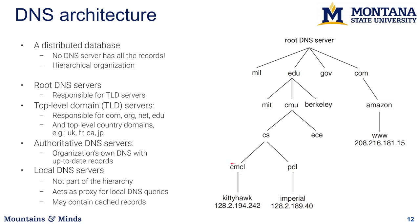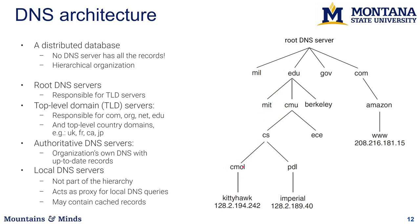Your local DNS server does this work iteratively, looking up different DNS servers. It will cache the address of, say, the Amazon server — so if you've already resolved a .com address, the .com TLD is cached and you don't need to go to the root server again. Then the local DNS server contacts Amazon's DNS to find the IP of the Amazon server you want, and that address is also cached so future lookups don't need the full trip.